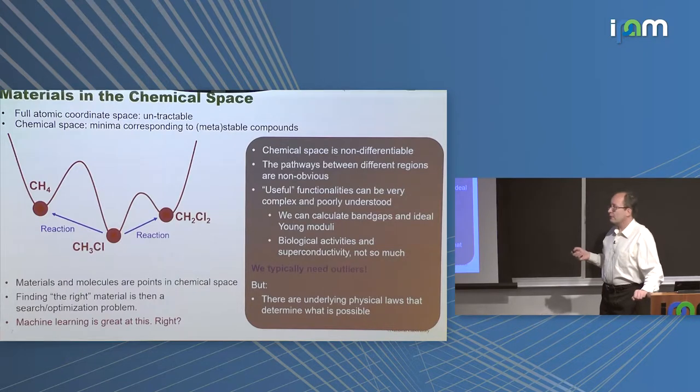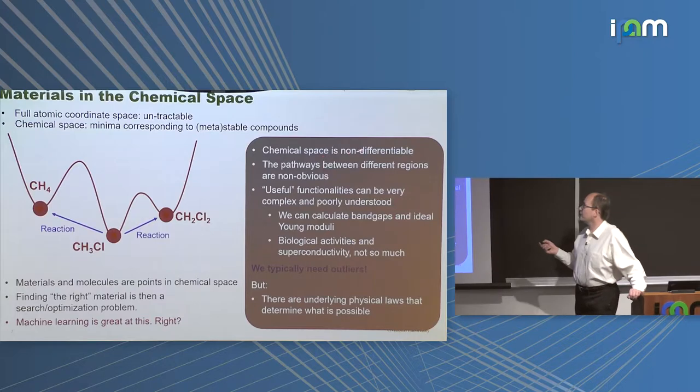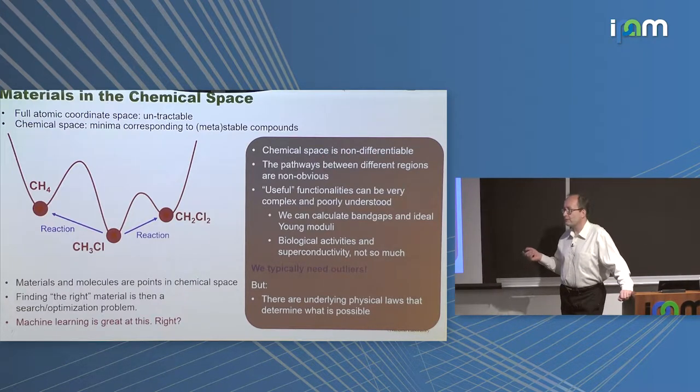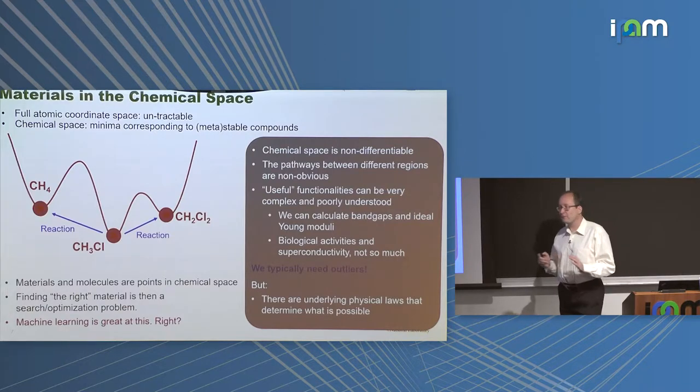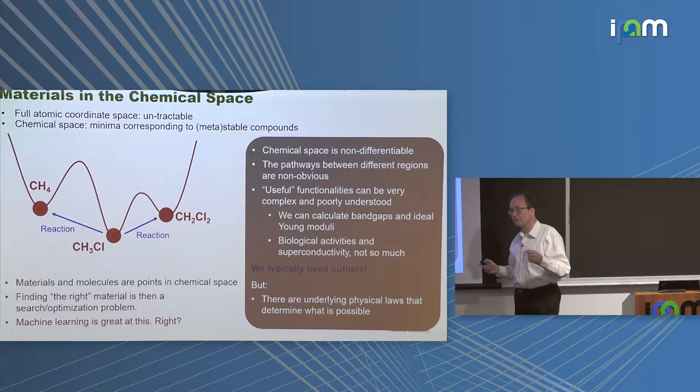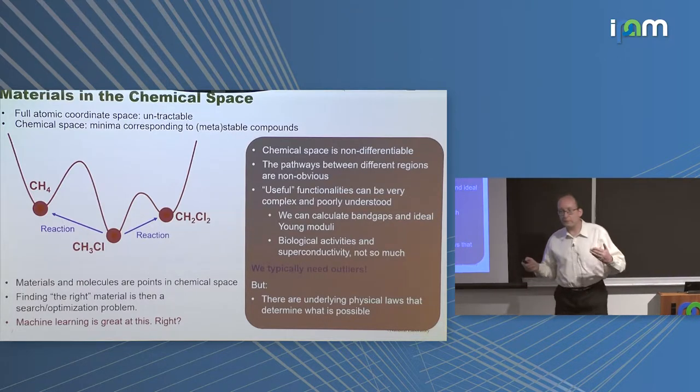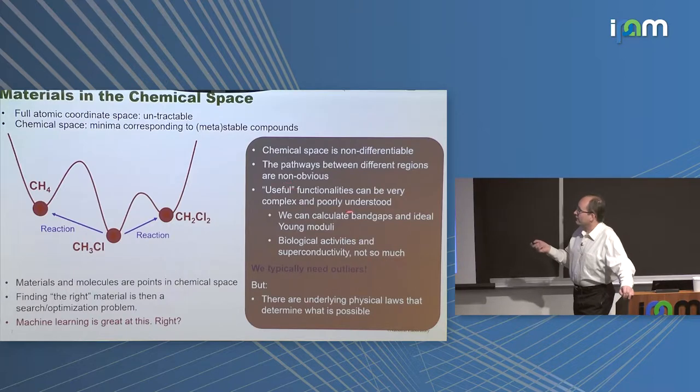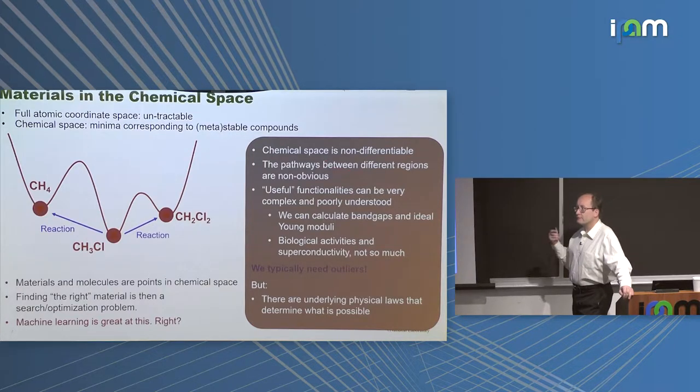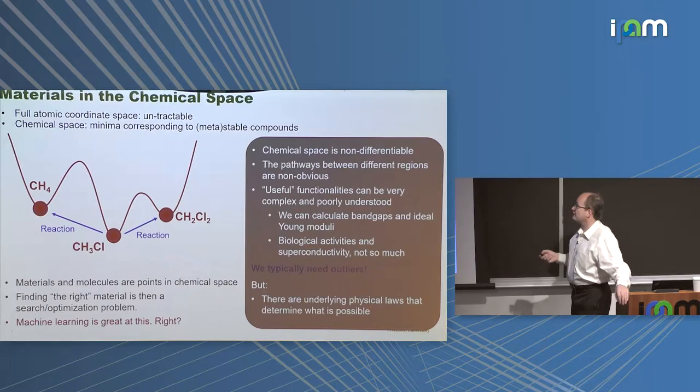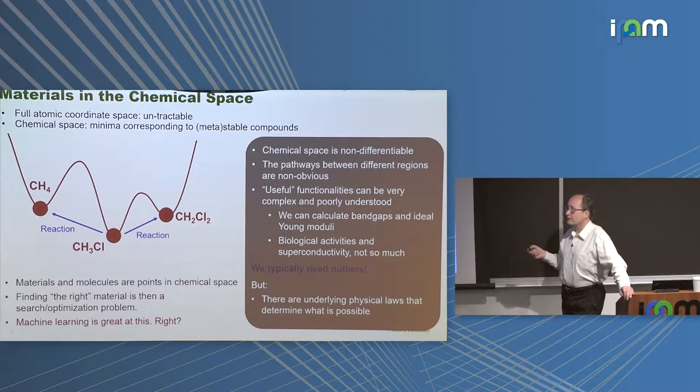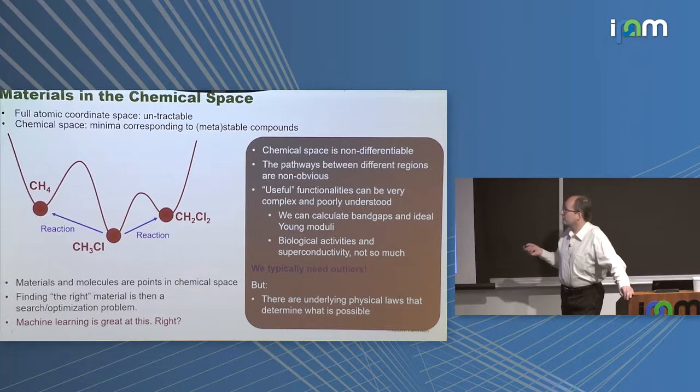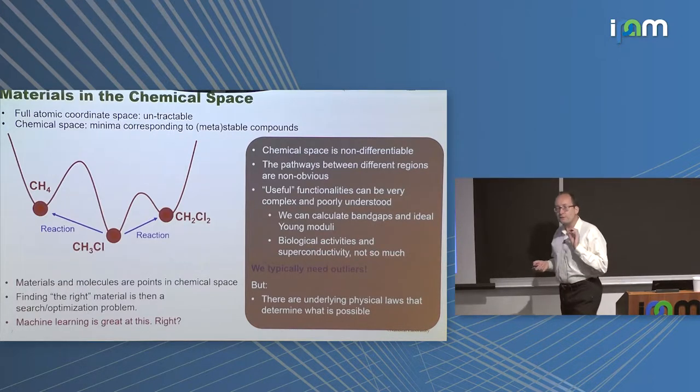Why is it difficult? It is very difficult because you deal with very anomalous space. First of all, the space is non-differentiable - I cannot just go from ethane to ethanol, no matter how I want ethanol. The pathways between different regions are not obvious. And the very important thing is that useful functionalities can be very complex and poorly understood.